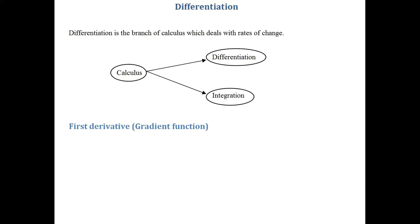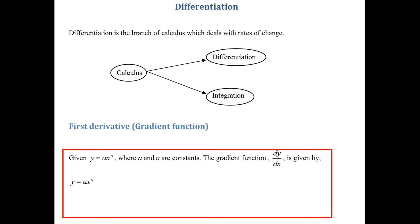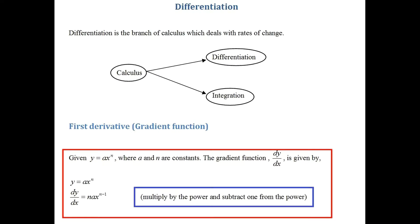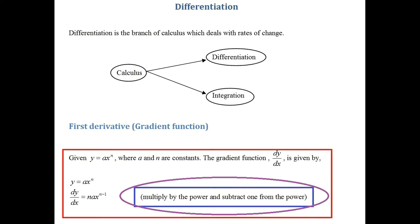The gradient function: if you're given y equals ax to the power n, where a and n are constants, the gradient function — dy over dx — is given by nax to the power n minus 1. Instead of learning the formula, learn the process: multiply by the power and subtract 1 from the power.